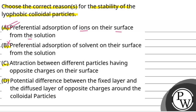Option C is attraction between different particles having opposite charges on their surfaces. This option is incorrect.